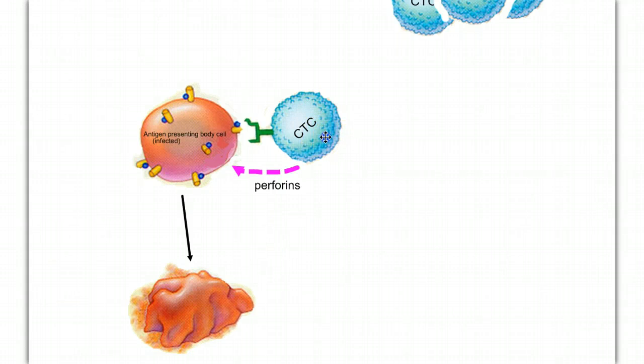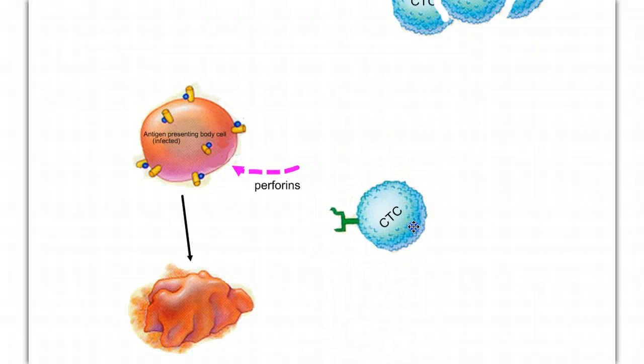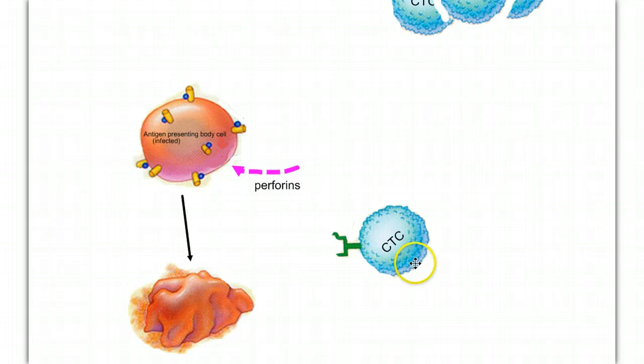The cytotoxic T-cell then moves on to find other cells to fight. This is why cytotoxic T-cells are referred to as killer T-cells.